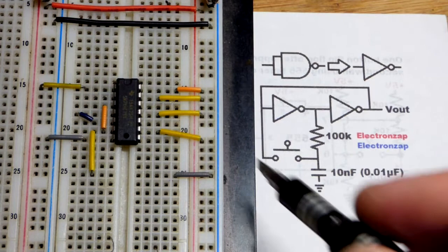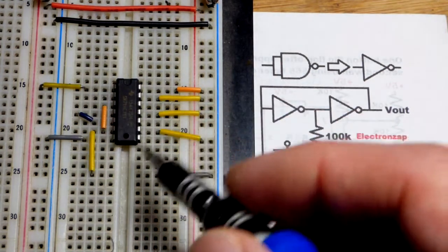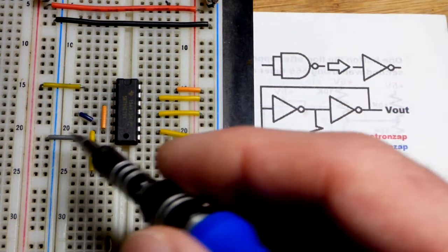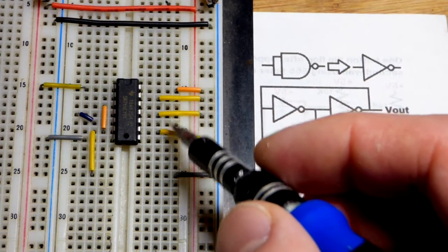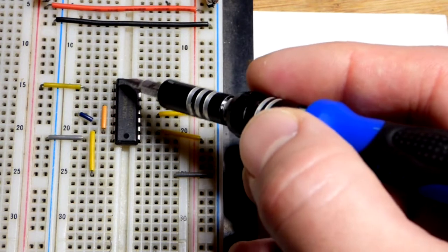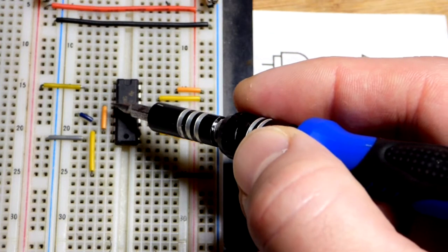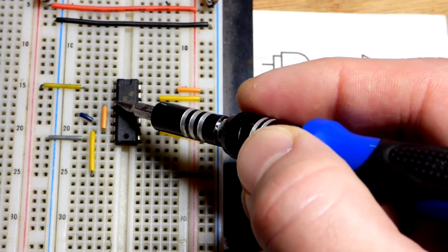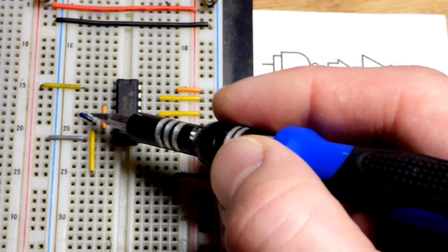We're using five volts. These are unused inputs, we're giving them a voltage. So input, output, and then we got the input right there. Let's go down to output - you can see that goes to the input of the next one, and then the output from the bottom one goes to the input there.